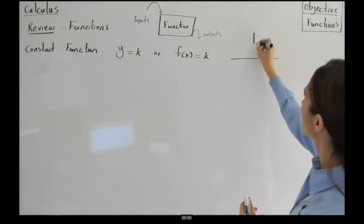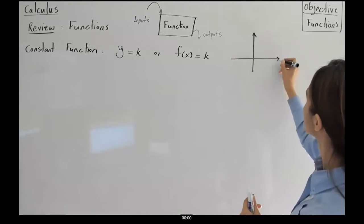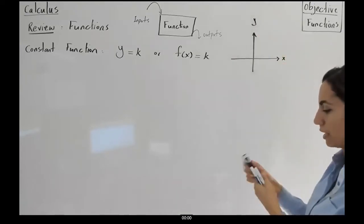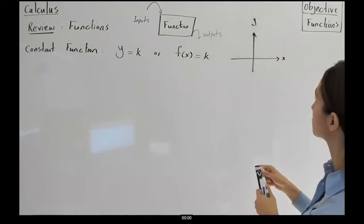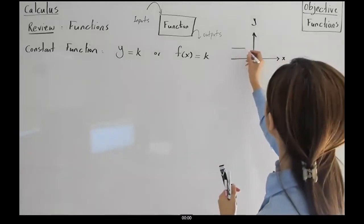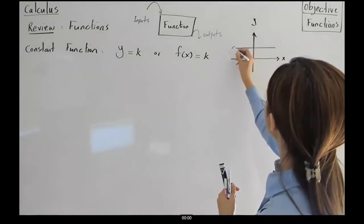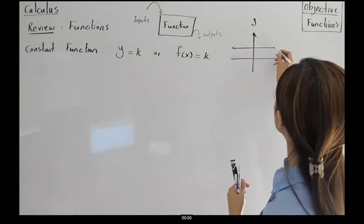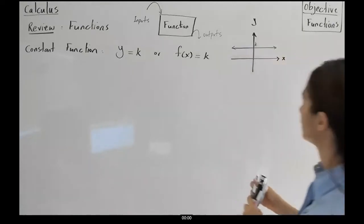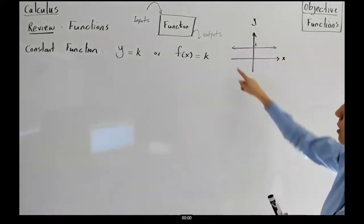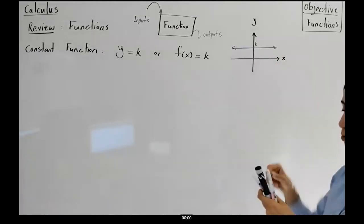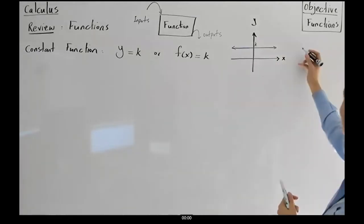The graph of a constant function has an X axis and Y axis, and you get a straight horizontal line. The Y value is fixed and equal to K. As you can see, the domain of the function is negative infinity to positive infinity, or R.